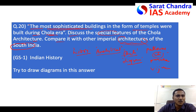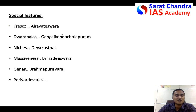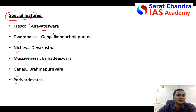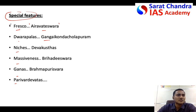Now you have to discuss the special features of Chola architecture. As you discuss the features, you should also give examples. The reason is you are trying to tell the evaluator that you know some of the temples of Chola architecture. You should throw facts into the answer - the only way you can show your factual knowledge is by giving examples. So don't just write the features and leave it; mention some examples so the evaluator knows you know the temples. For example, one special feature is the fresco paintings.